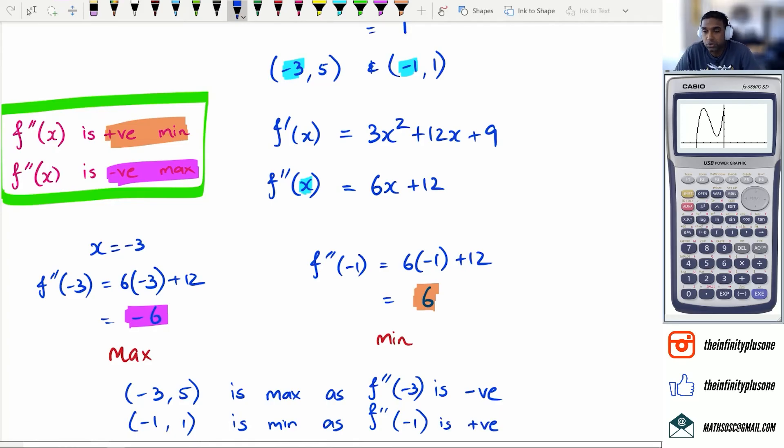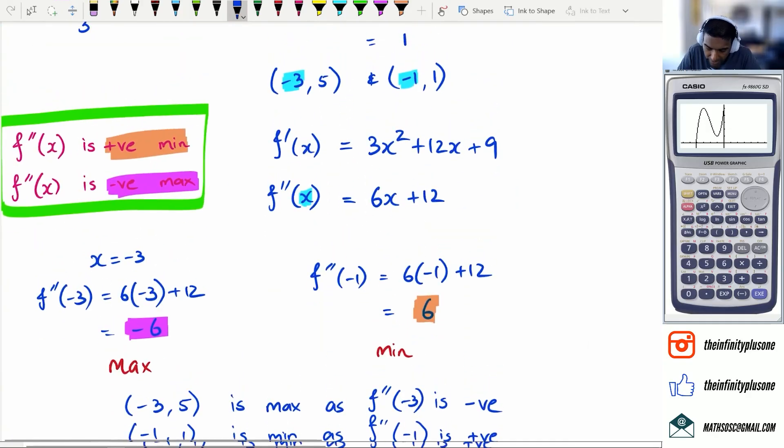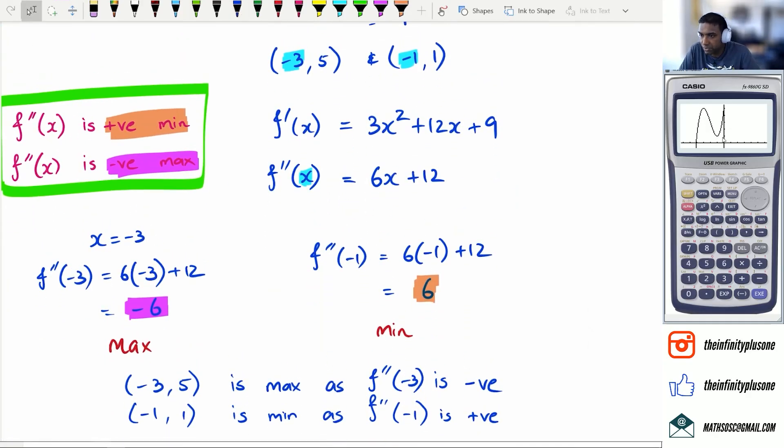So at this point, you can actually write a statement saying something like this: negative 3, 5 is max as f''(-3) is negative. And then you can say negative 1 and 1 is minimum as f''(-1) is positive. So you are actually allowed to do this particular method. If you remember the previous video where you had to find the gradient before and after the turning point to figure out if the two signs are different, well, the double differentiation rule works perfectly fine. So if we go back to the graph again, as you can see, negative 1, 1 is a minimum, negative 3, 5 is a maximum, and we have actually proved it using calculus.